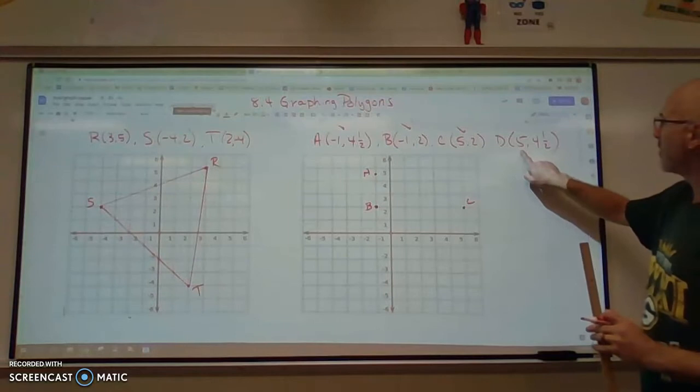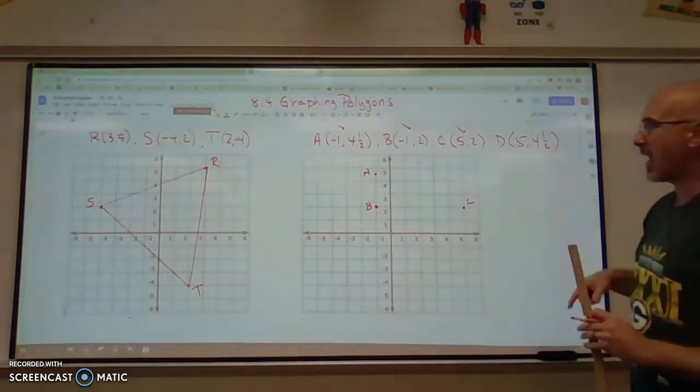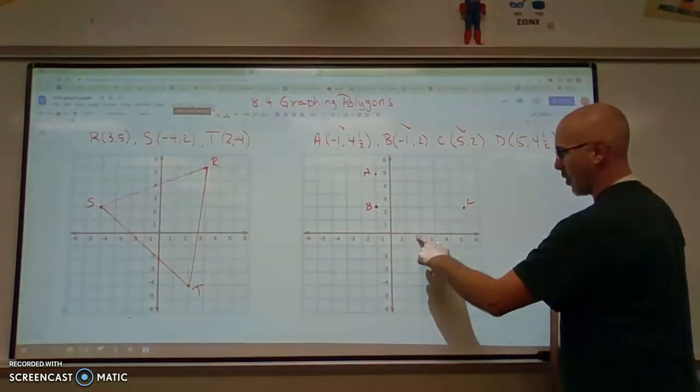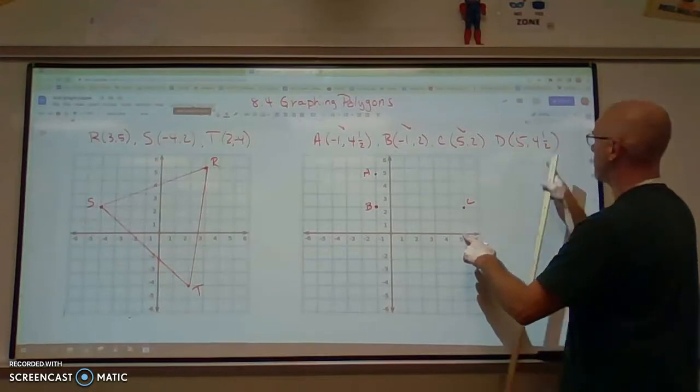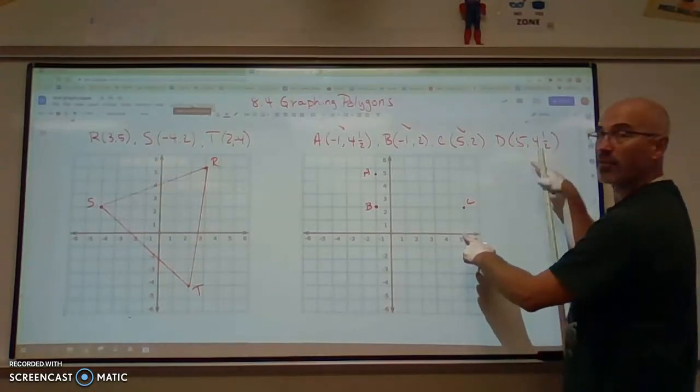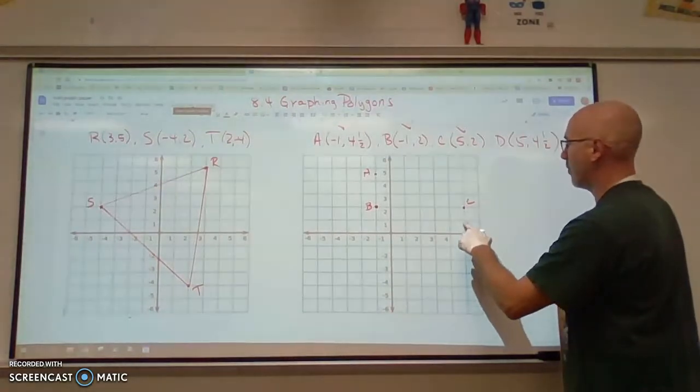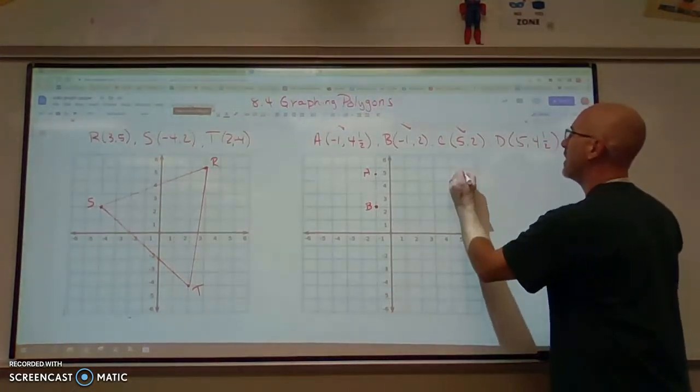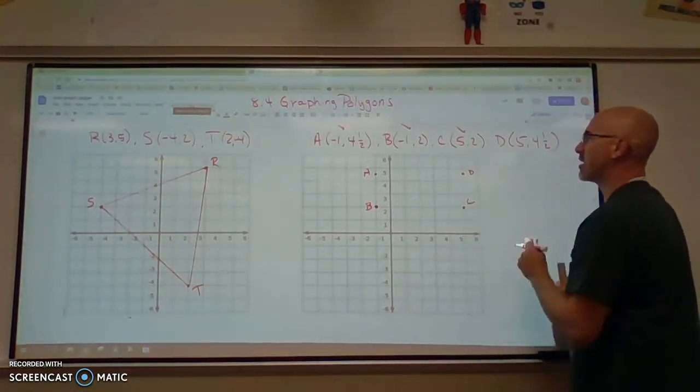And our last point is at 5, 4 and a half. So we're going to go 5 in the x direction and then up 4, positive 4 and a half. 1, 2, 3, 4 and a half. So there is our point D.